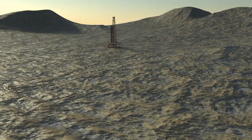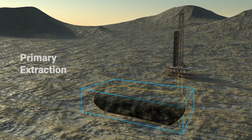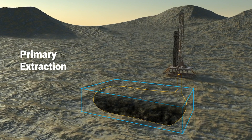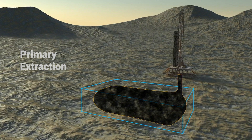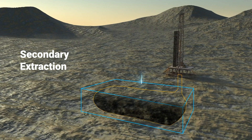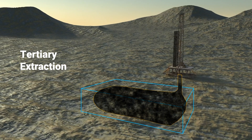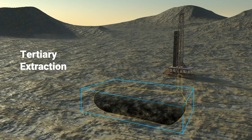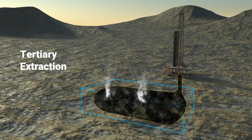Oil can be extracted in various ways. Primary extraction exploits the natural pressure of the reservoir, allowing oil to flow to the surface without mechanical assistance. Secondary extraction injects water or gas into support wells to push crude oil toward the production wells when pressure decreases. Tertiary extraction, also called enhanced oil recovery, employs techniques such as steam, polymers, or carbon dioxide injection to increase crude oil fluidity and improve recovery rates.